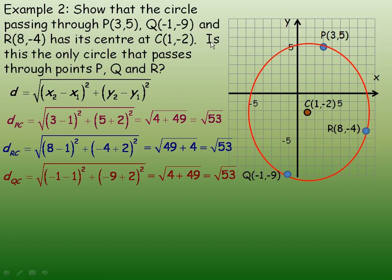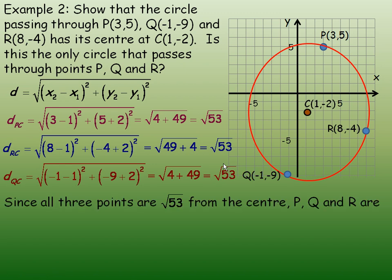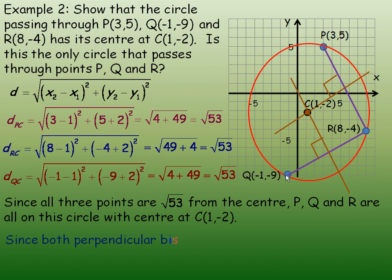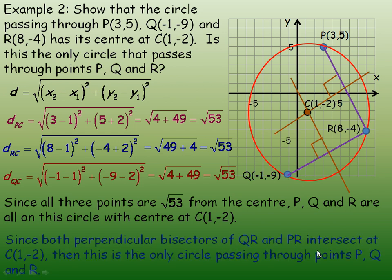We are asked one more question: is this the only circle that passes through points P, Q, and R? To verify this, draw chords from P to R and Q to R and draw in their perpendicular bisectors. You will find that both perpendicular bisectors pass through point C. This means C is the only possible center for this circle, so there is only one circle that can be drawn passing through those three points. Since both perpendicular bisectors of QR and PR intersect at C, this is the only circle that passes through P, Q, and R.